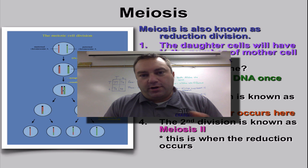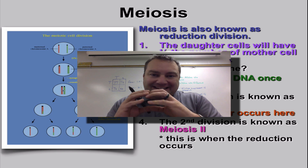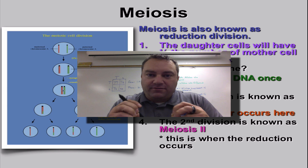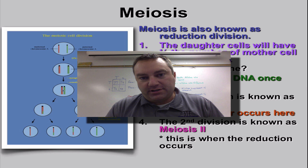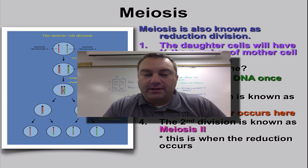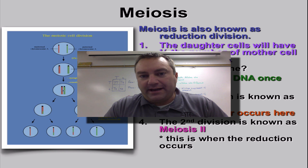In part three of this series, we're going to go over the process of meiosis. Meiosis is a really important form of cell division because it takes a diploid mother cell and divides it into haploid daughter cells. These haploid cells are most likely going to become the gametes that will help create the next organism. We're not going to go through all the detail of all the phases because you had that in the last chapter when you went over mitosis.